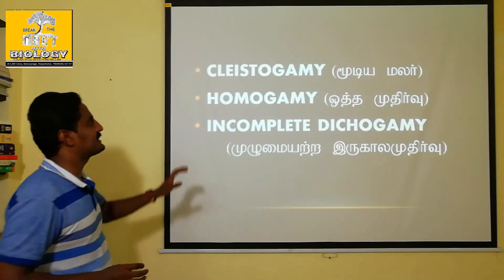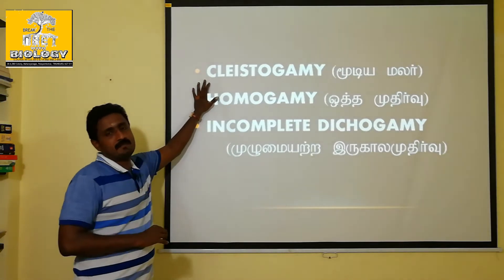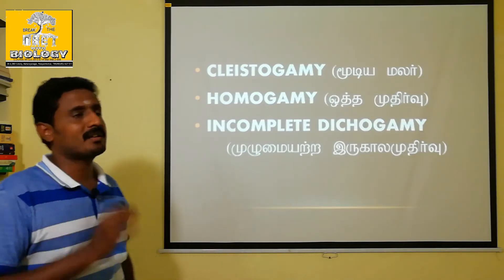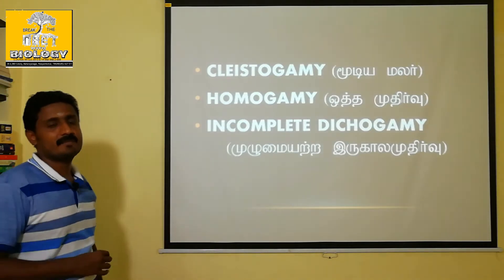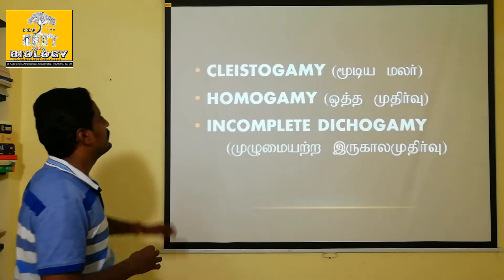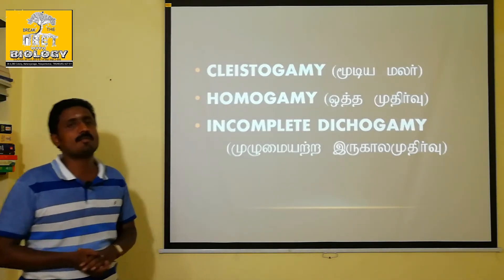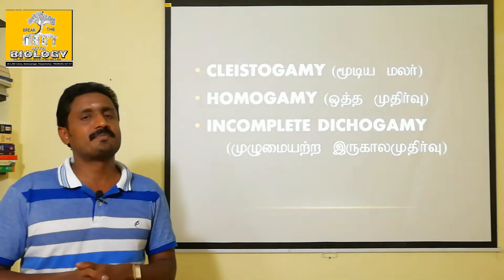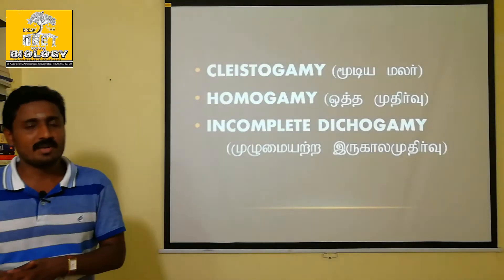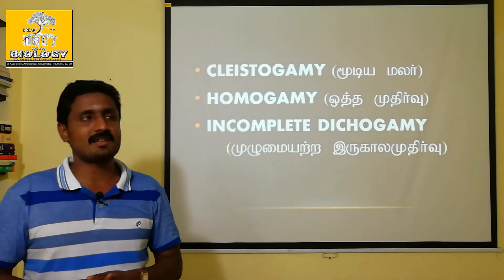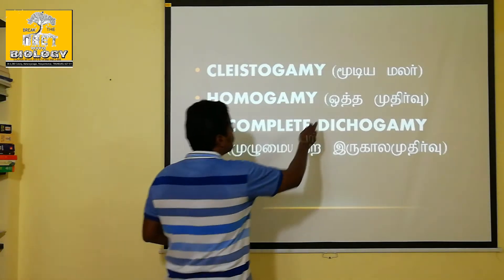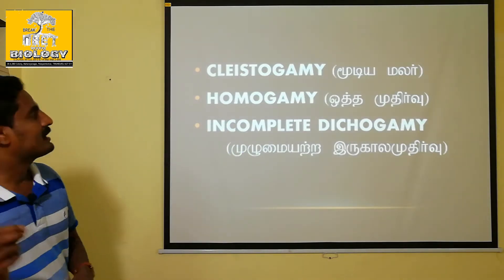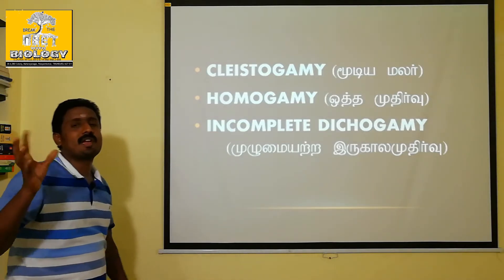The first type is Cleistogamous flowers. The second type is Homogamy — where the pollen (maharanda) and stigma mature at the same time (sulaha vattam — same time period). That is Homogamy.